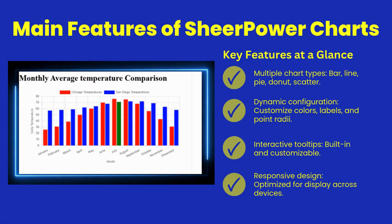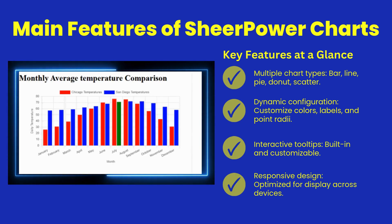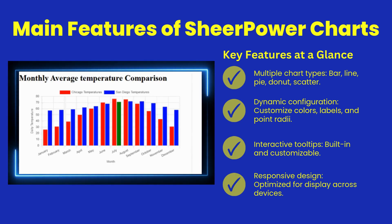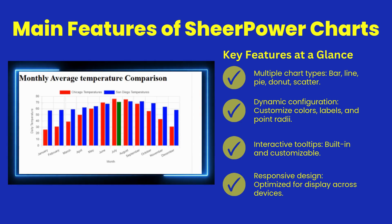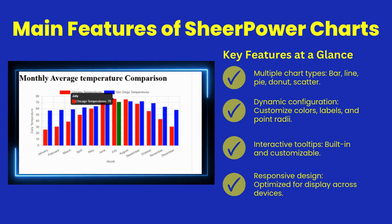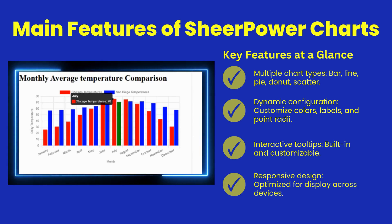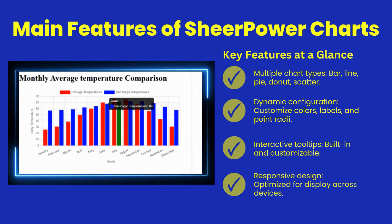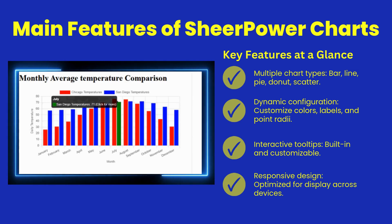SheerPower Charts support bar, line, pie, doughnut, and scatter charts, offering flexibility for visualizing comparisons, trends, proportions, and relationships. Easily customize colors, labels, and point radii to create visuals tailored to your audience and goals.